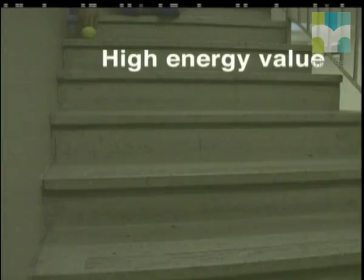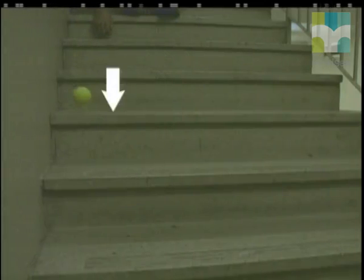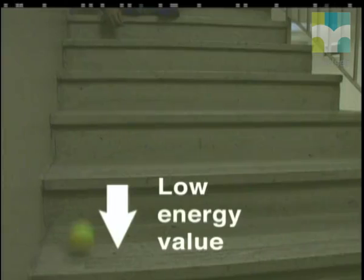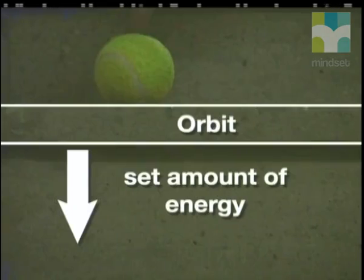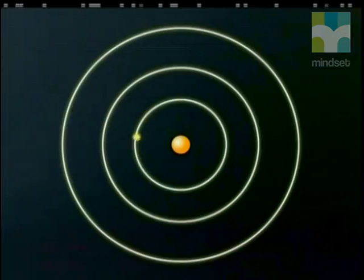When it rolls down to the next step, it has a smaller amount of energy. The ball cannot stop in between steps — it must either be on the high step or on the step directly below. This is a way to think of the energy of the orbits.